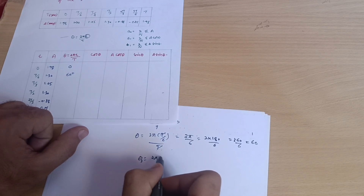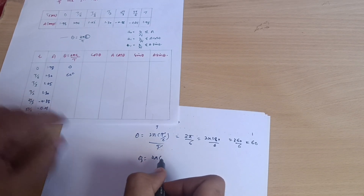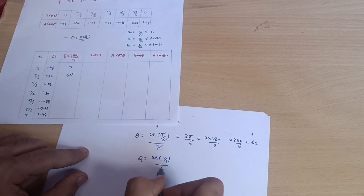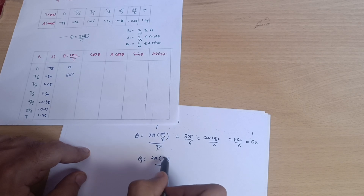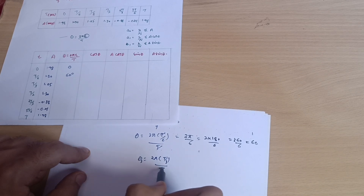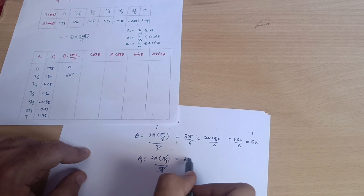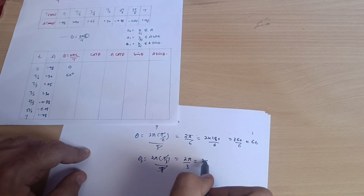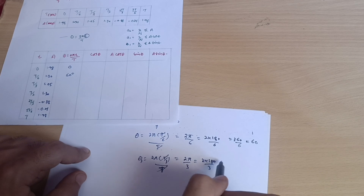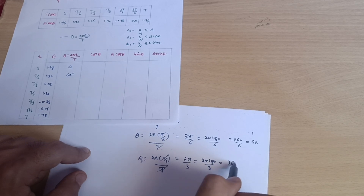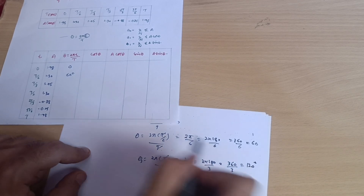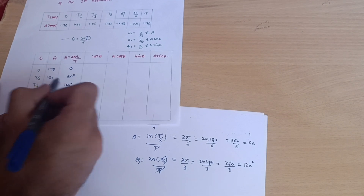For t = T/3: θ = 2π × (T/3) / T — the T's cancel — giving 2π/3 = 2 × 180 / 3 = 360/3 = 120°.